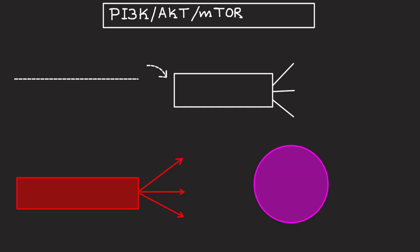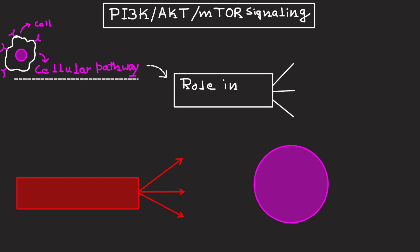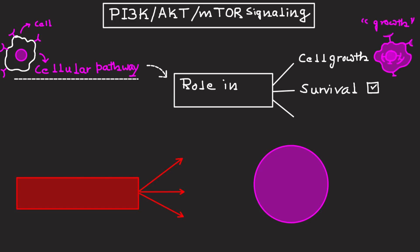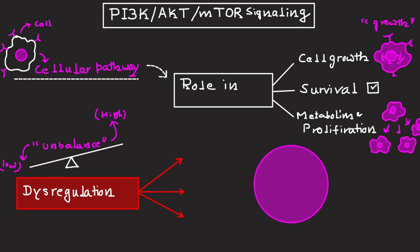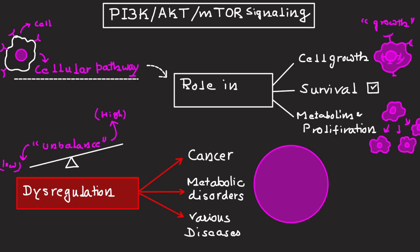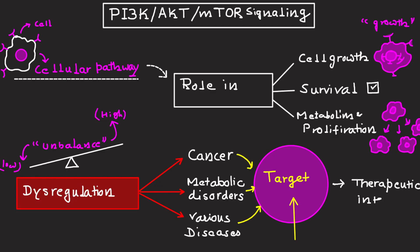Today we will be understanding the PI3K-AKT-mTOR signaling pathway. As the name indicates, there are various signaling molecules involved. This is one of the most extensively studied cellular signaling pathways due to its role in cell growth, survival, metabolism, and proliferation. Dysregulation of this pathway can lead to diseases like cancer and metabolic disorders, making it a significant target for therapeutic interventions.